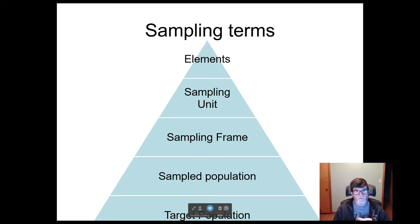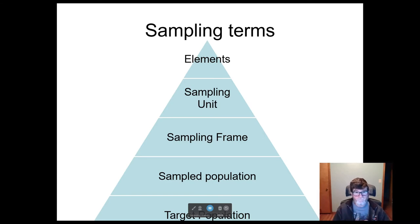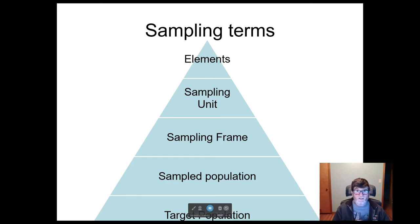There are a few sampling terms to cover. Elements are the things we're actually collecting data on or interested in. Those elements occur within some sampling unit. The whole collection of sampling units forms the sampling frame — that's where we draw our sample from, and it also represents the sampled population. There's also the target population: the elements we'd like to draw inference about. Ideally the sampled population and the target population are the same, but there may be circumstances where that's not true.